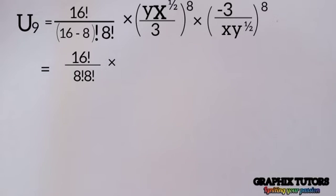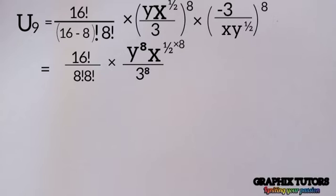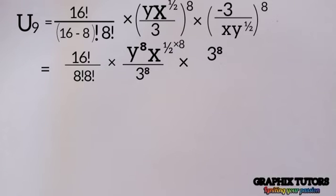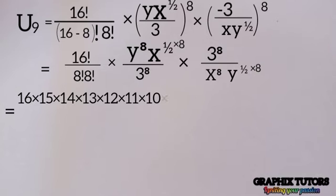Recall the rule that (a over b) to the power of r equals a^r over b^r. Expanding the bracket, we get y to the power of 8, times x to the power of (1/2 × 8 = 4), divided by 3 to the power of 8. Then multiplied by: since minus 3 is raised to an even power of 8, the negative cancels, giving 3 to the power of 8, all divided by x to the power of 8 times y to the power of (1/2 × 8 = 4).